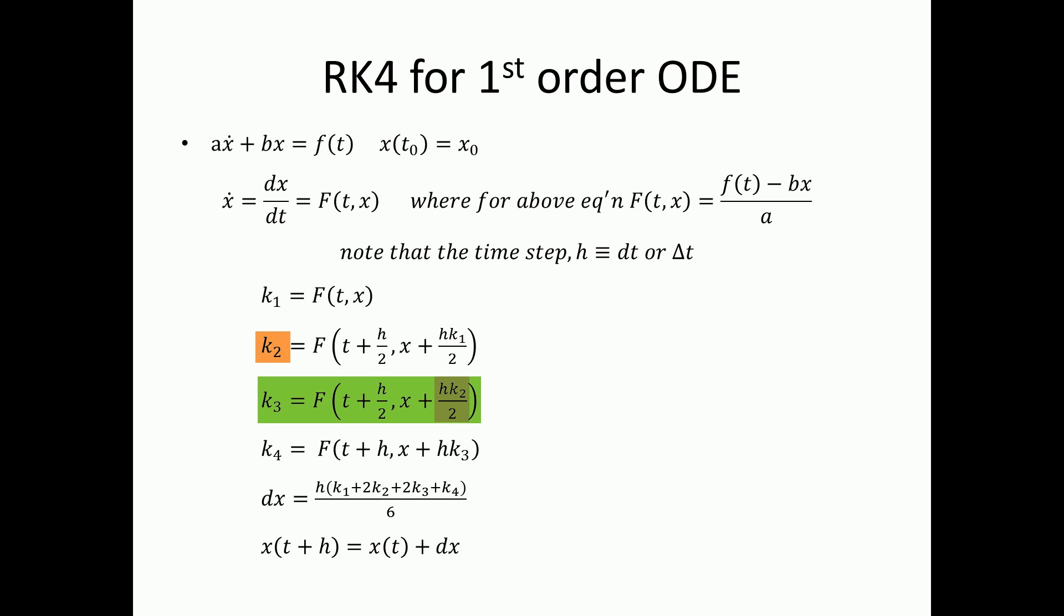For the fourth slope, the slope is evaluated at a full time step ahead, and you use the third slope approximation to get an approximation of the position. You then take the weight average of all the four slopes and multiply it by the time step in order to obtain the change in position. Then you take that change of position and add it to the current position.